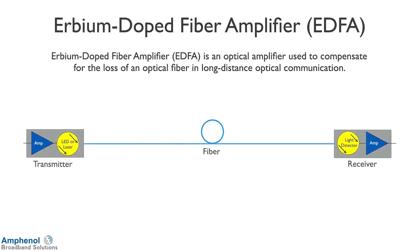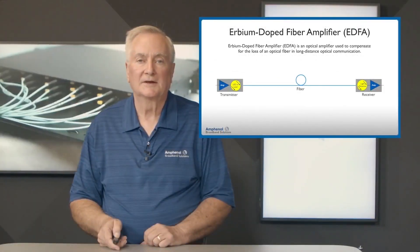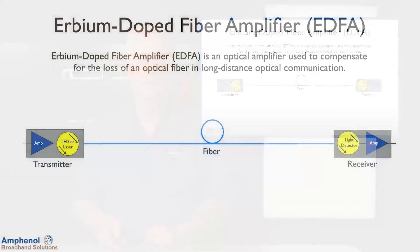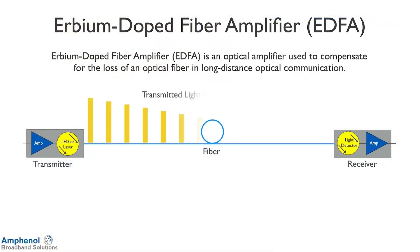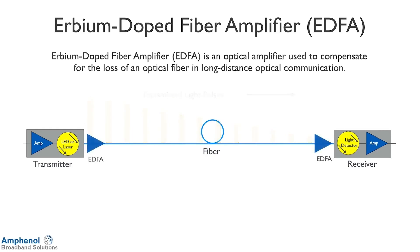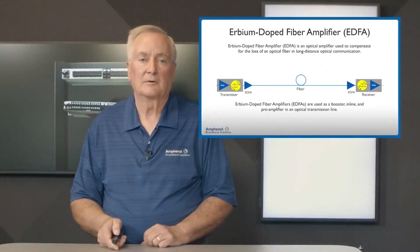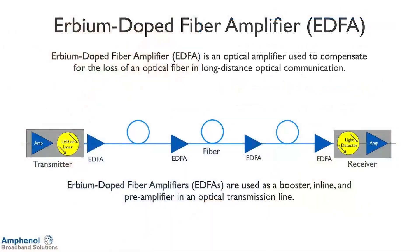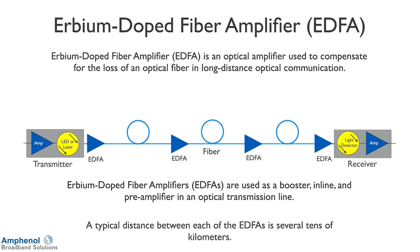Next we're going to look at Erbium Doped fiber amplifiers, EDFAs. This is an optical amplifier used to compensate for the loss through optical fibers over long distances. Light pulses from the transmitter lose too much signal by the time they travel down the fiber optic cable, and the optical receiver can't distinguish the information. EDFAs can be placed right at the output of the transmitters, as preamplifiers in front of receivers, or in-line for longer distances. A typical distance between each EDFA is several tens of kilometers.